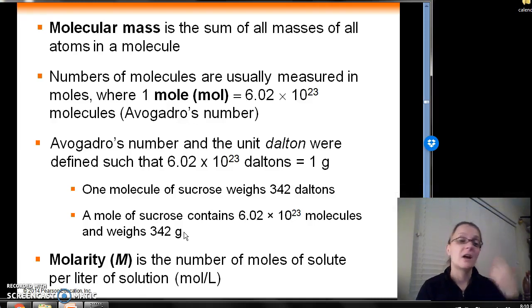The nice thing is that Avogadro's number and unit Dalton were defined in such a way. We can do the math to do this comparison as well. But the two units were defined in such a way that we know one mole is equal to 6.02 times 10 to the 23rd molecules for Avogadro's number,